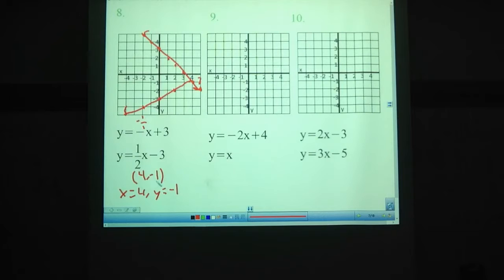Be used to the idea that there's quite often two different ways this solution may be written. Either as a point, as an ordered pair like this, or as an x and y coordinate. Okay, number 9. y = -2x + 4. y = x. So -2x + 4, that's going to start at positive 4. And we'll go down 2 to the right 1. We cross right here.